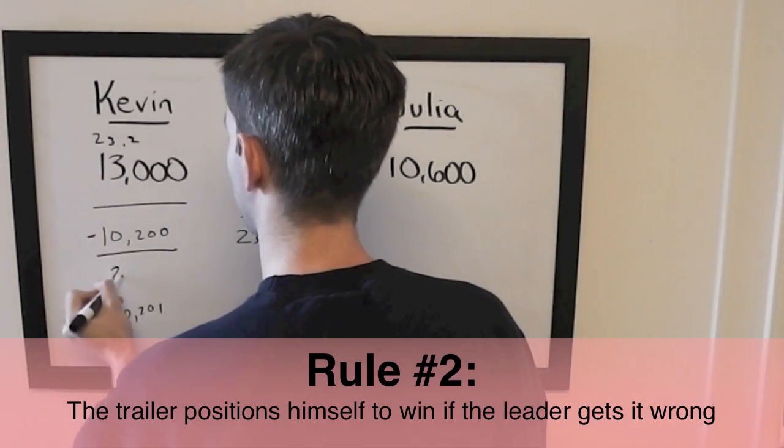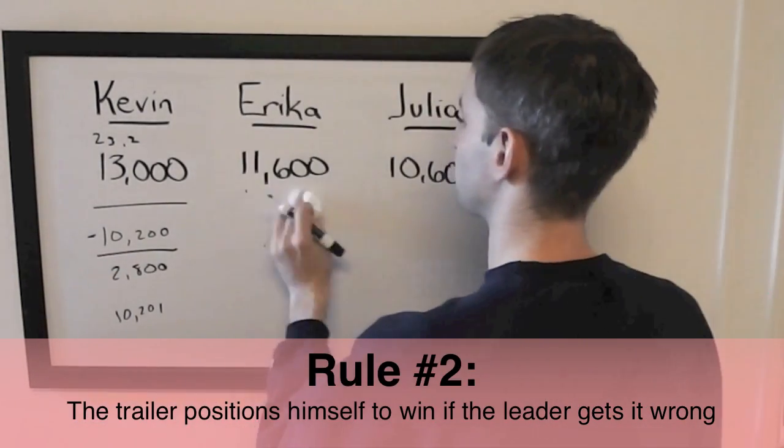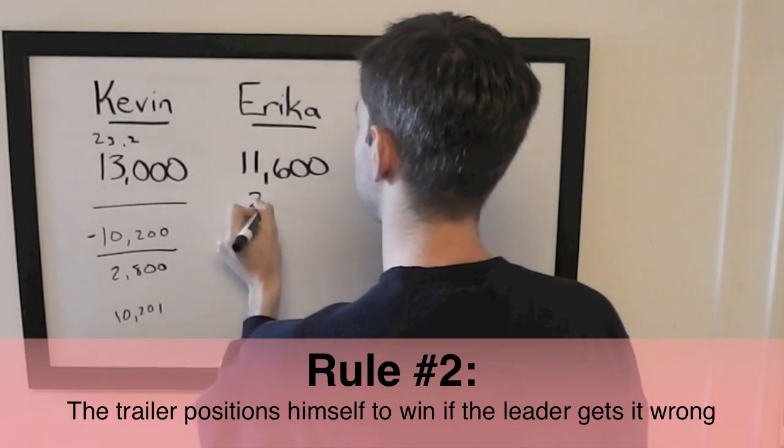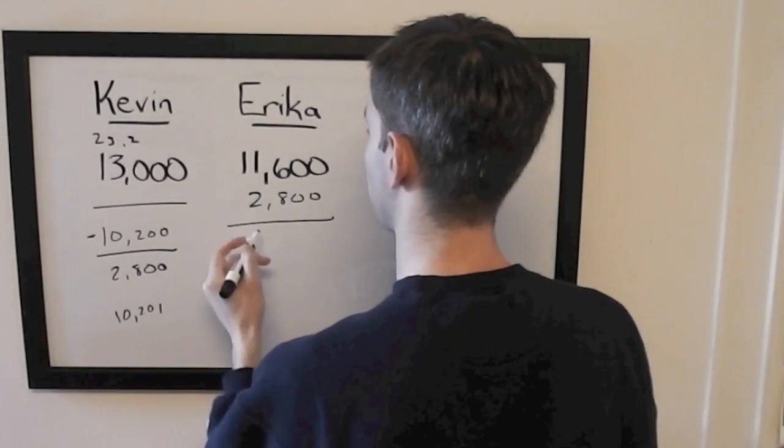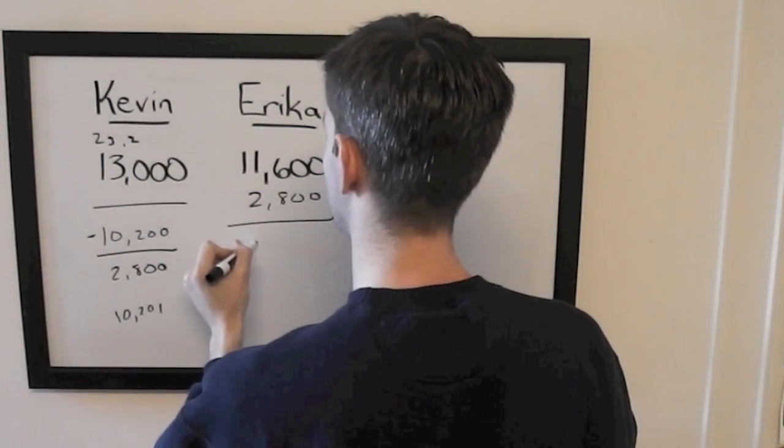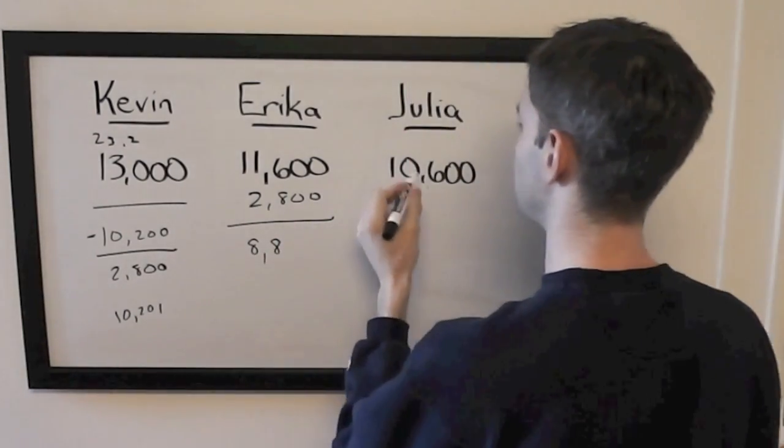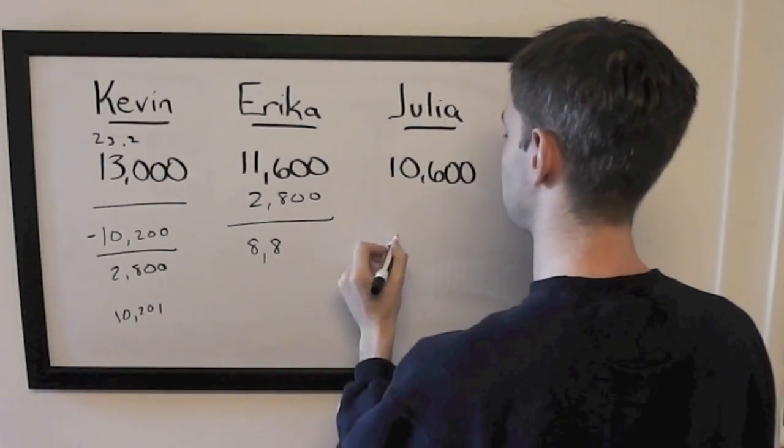If Kevin is wrong with that wager, he'll be left with $2,800. So Erica can wager up to $8,800 and Julia can wager up to $7,800.